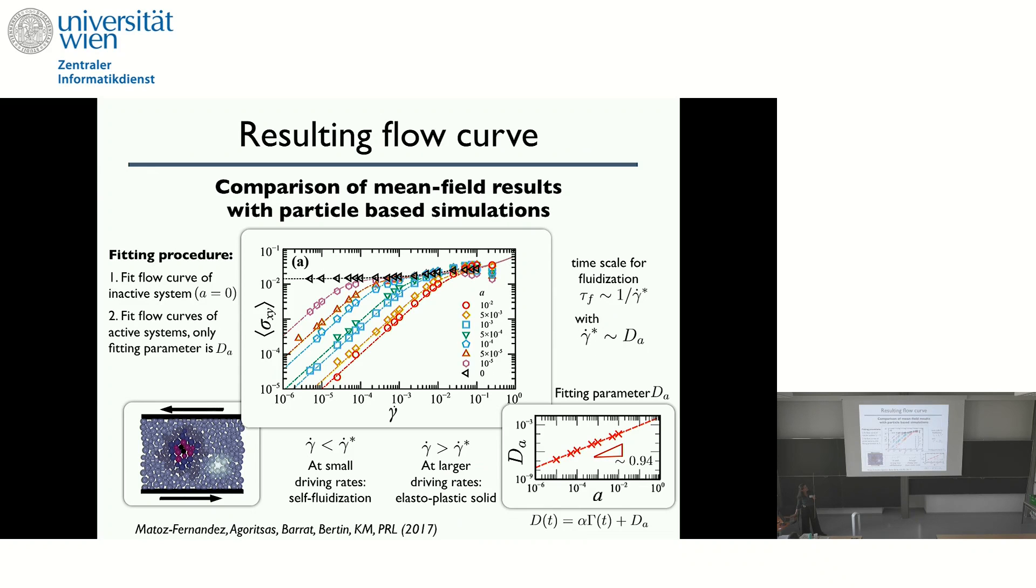And when you do this, you can look at the resulting rheology. And these are the flow curves coming from the simulations. And you can actually fit very well these flow curves with the mean field model, which are these dashed lines. And to do so, you fit first the non-active curve and then you fit the flow curve of the active system, but the only fitting parameter is D_A. And what you see is that at small driving rates, you see a fluidization. So this is Newtonian here for lower shear rates. And then at larger driving rates, you recover an elastoplastic solid. We have this transition, meaning that at slow enough deformation, your system will always appear like a fluid.